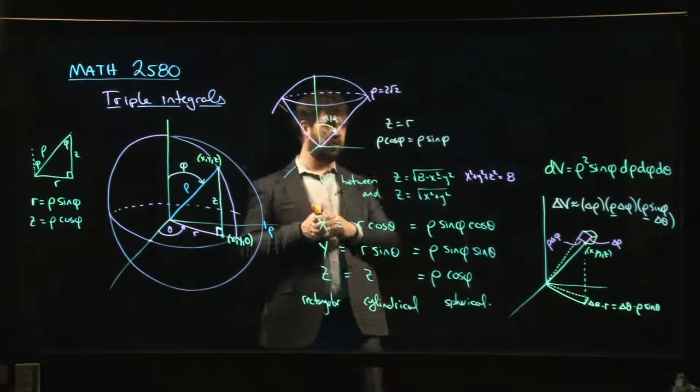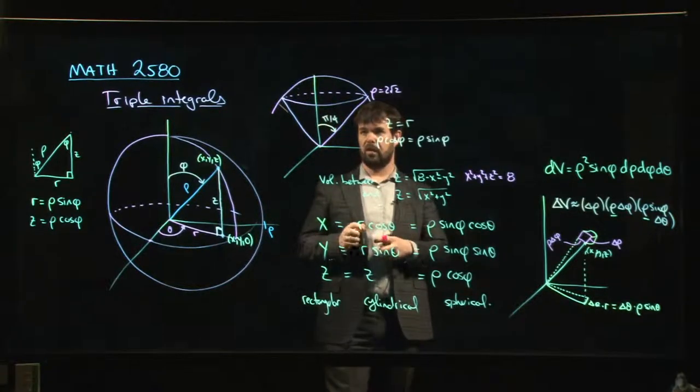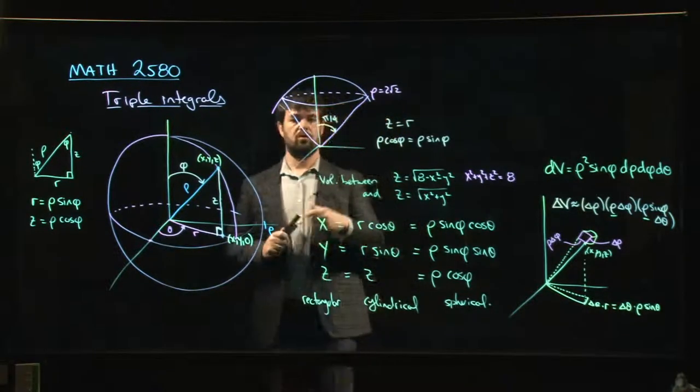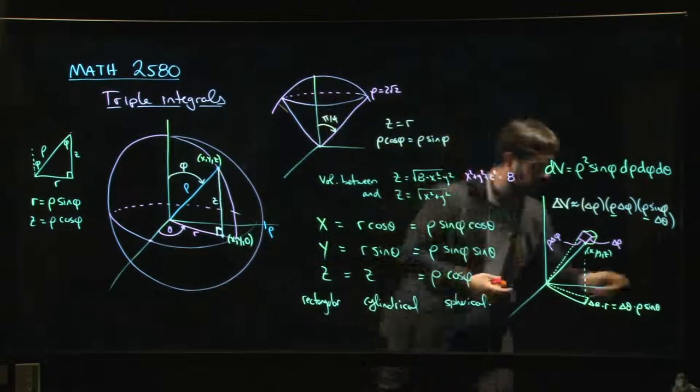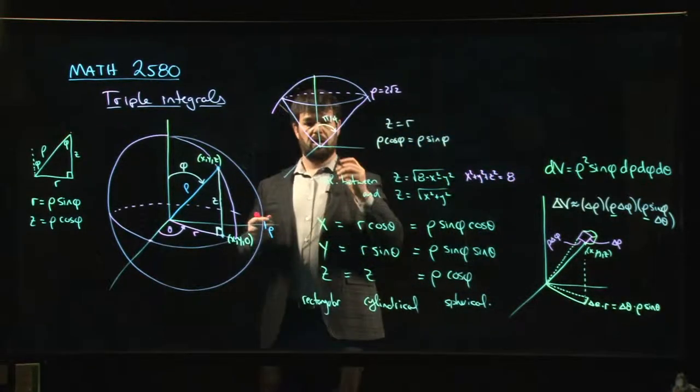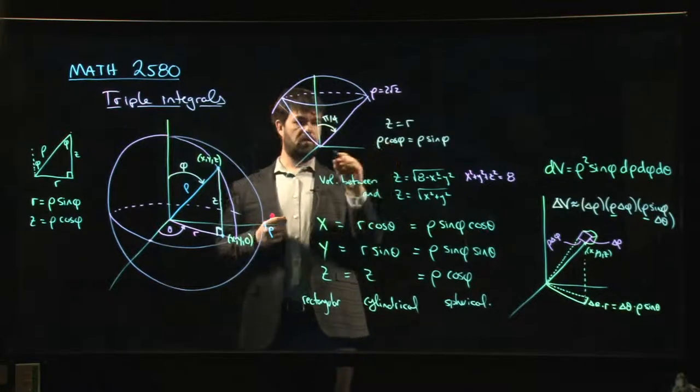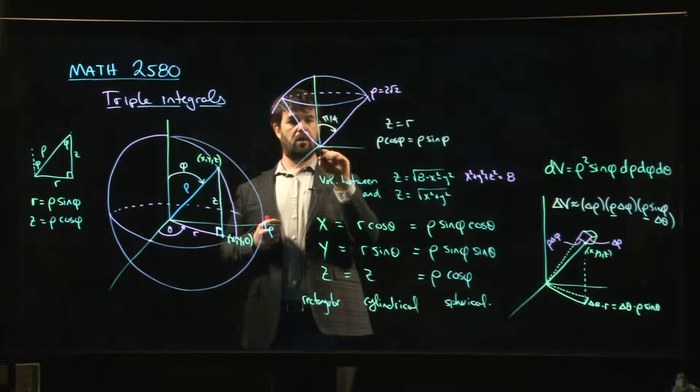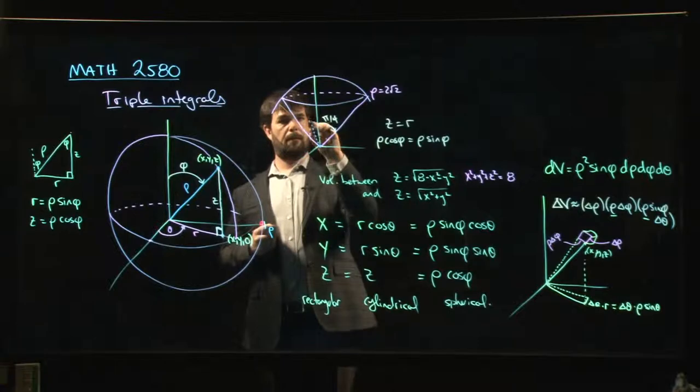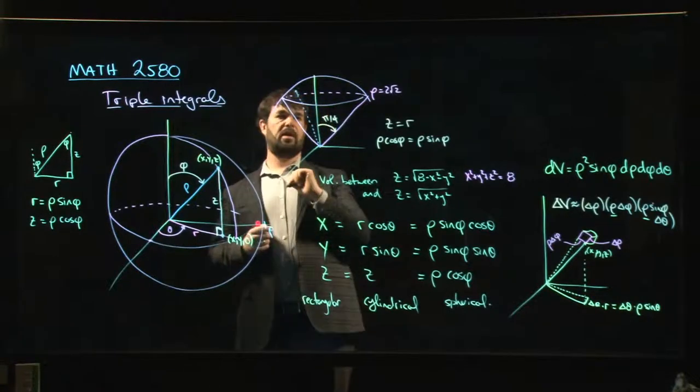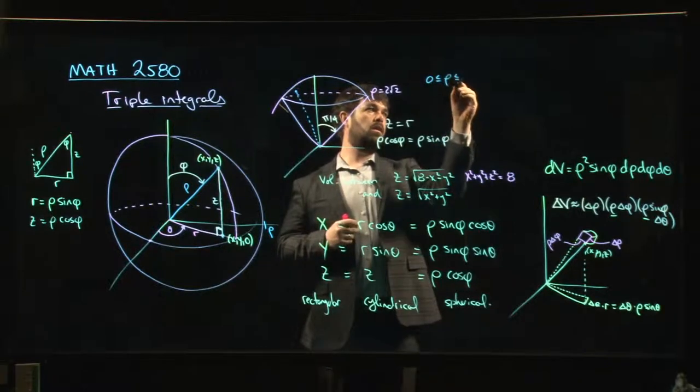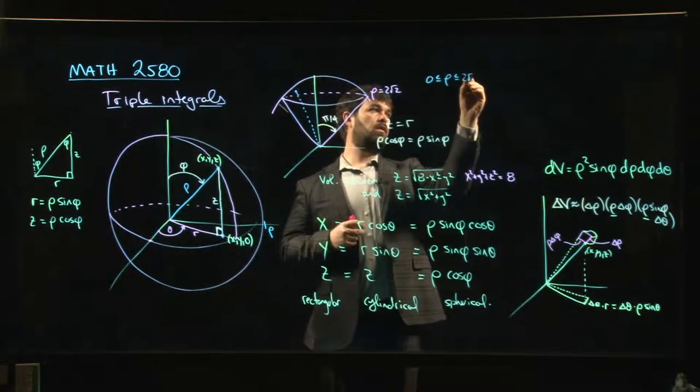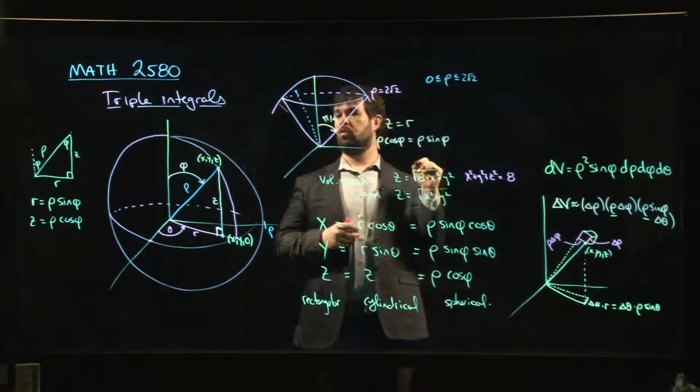So the way we think of describing this region in spherical coordinates is that you start at the origin. So you start down at the origin. Let's get one more color. And so we think about the range for rho first. Rho starts down here at 0, and we go out until we hit the sphere.